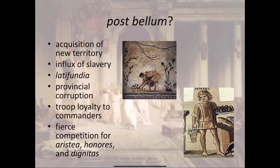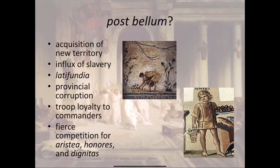The Roman government wanted to extract resources and taxes from their new provinces, but the way they went about it caused more problems. They basically did something equivalent to tax farming: different companies in Rome would bid for the right to collect taxes in far-off provinces. Whatever they bid was the actual revenue the Roman government took in. Then that company would go to the province and try to make more than what they bid — a profit — which led to exploitation of the people living there.